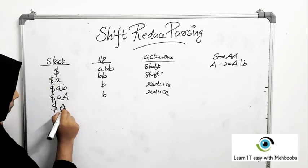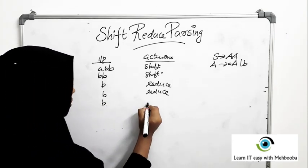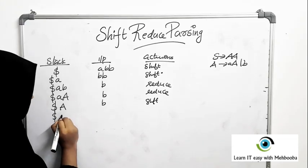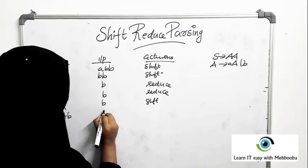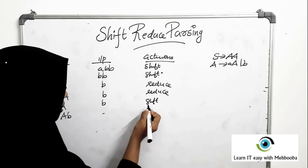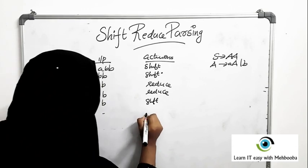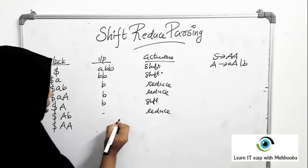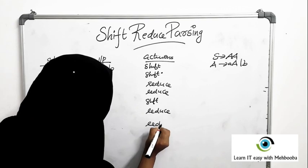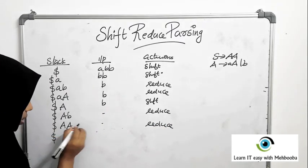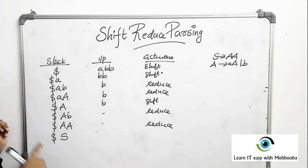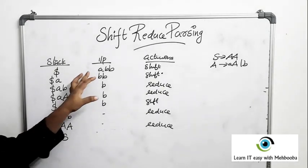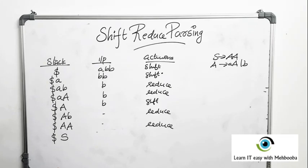Now A A is a handle, so it reduces A A, getting capital A capital A. Capital A is not a handle, so it shifts b onto the stack. The input is now empty. Since b is a handle it reduces b, getting A A. The input is empty, so A A is again a handle and reduces to give S, the start symbol, on top of the stack.